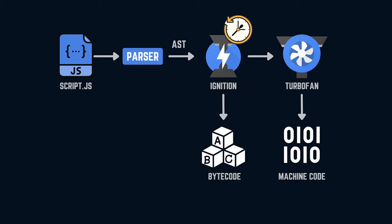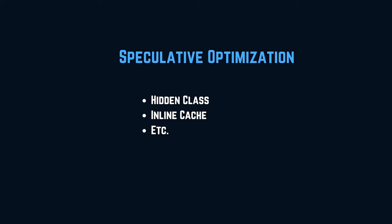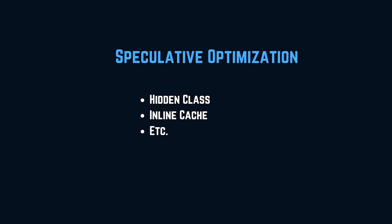Turbofan not only converts bytecode to machine code but also applies various optimization techniques. As execution progresses, the ignition interpreter collects analysis information or feedback on various operations, mainly the type of input for an operation. Once the engine categorizes inputs into different types, turbofan can optimize an operation for a particular type of input, avoiding unwanted steps in subsequent runs. This type of optimization based on assuming the same type of input in subsequent runs is called speculative optimization. We will discuss two specific optimizations: hidden class and inline cache.